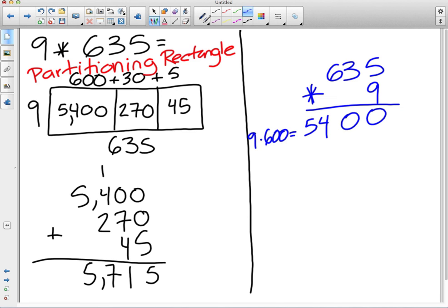Good, Chase. What do we do next? Next, we need to do 9 times 30. And 9 times that 3. That 3 happens to be in what place? The tens place. And how many tens do we have? 3. So that is 9 times 30. 9 times 30 is 270.